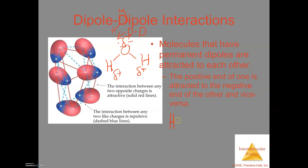Looking at the HCl molecule from the beginning: HCl is a polar molecule. Hydrogen is less electronegative than chlorine, so you form a partial positive on the hydrogen and a partial negative on the chlorine. This leads to a dipole-dipole interaction between the hydrogen of one molecule and the chlorine of a neighboring molecule. Remember the difference between inter and intramolecular — we're only focused on the intermolecular force, which is the interaction between two different molecules.